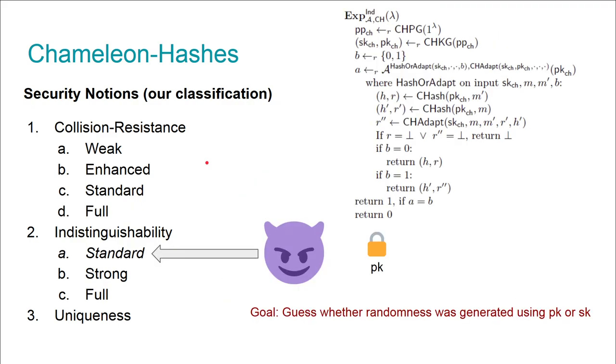Let's go to the privacy notions. Indistinguishability in a nutshell requires that a hash-randomness-message tuple does not reveal whether it was created using the hashing algorithm or the adapting algorithm.